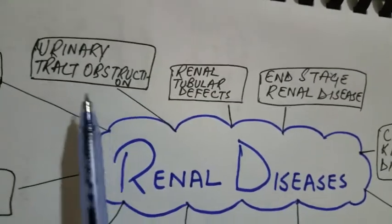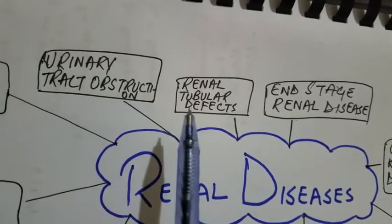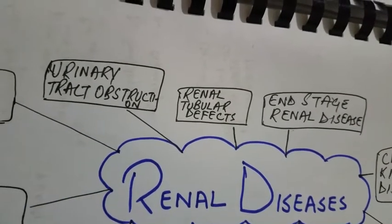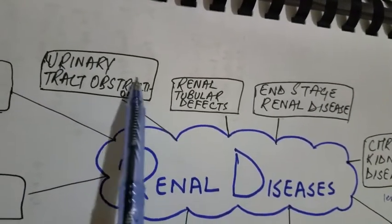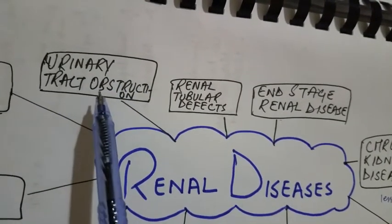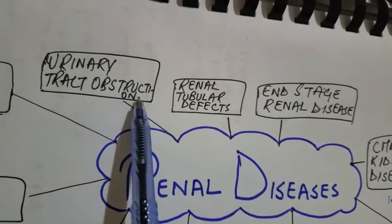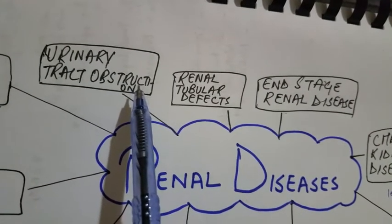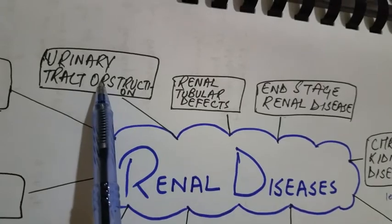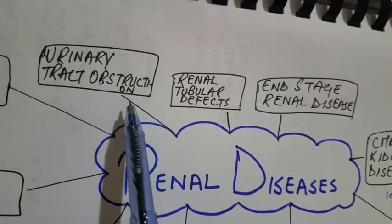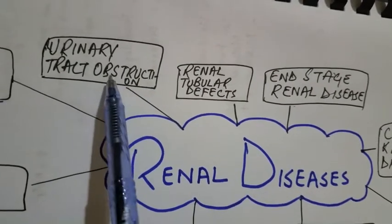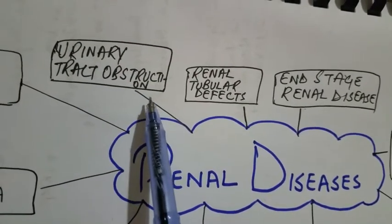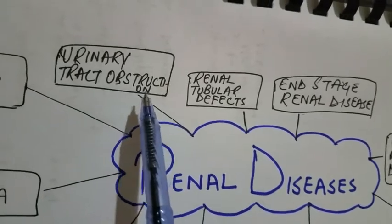Urinary tract obstruction is either due to kidney stones or tumors. Urinary tract infection is characterized by bacteriuria — bacteria present in the urine — and pyuria, meaning leukocytes present in the urine. It may be symptomatic or asymptomatic. When it involves only the kidney, it is known as pyelonephritis; when it involves the bladder, it is known as cystitis.